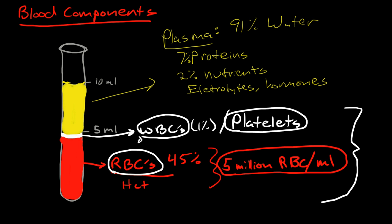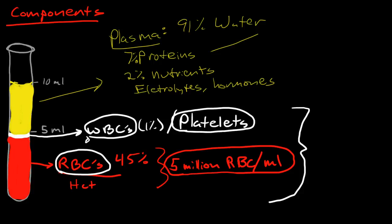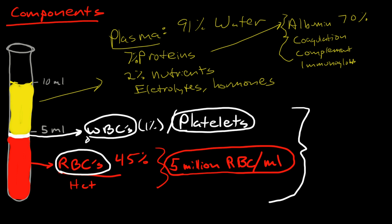Proteins we can further subdivide into albumin, which is about 70% of all proteins. Then we have coagulation proteins, complement proteins, and immunoglobulins. Coagulation proteins make up about 10%.